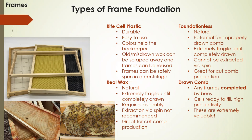Real wax foundation can be used for cut comb honey. Depending on the type of foundation, your methods of honey harvesting are going to be different. Cut comb honey is when you take a foundationless or real wax frame, use a cookie cutter to cut out the wax and honey together, and sell or give that as-is — the recipient gets honeycomb with honey, and you can use the wax as chewing gum too. If you want to spin your honey in a centrifuge, real wax or foundationless is not ideal because the centrifuge can go fast enough to actually destroy those frames. That's where right-cell plastic comes in — it'll stand up to the centrifuge.